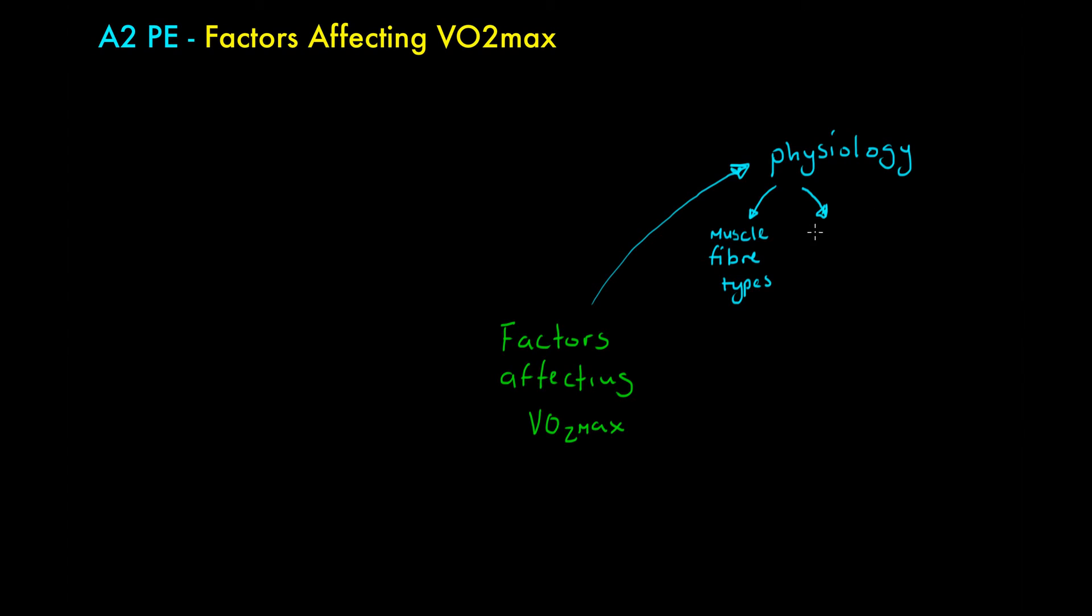So we might expect someone to have a higher capillary density. The capillary is where gaseous exchange takes place. So if we have a higher capillary density at both the lung at the alveoli and also at the muscle, then we're better at exchanging oxygen in those areas.